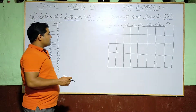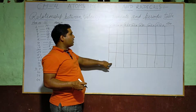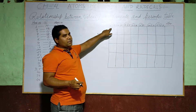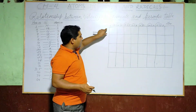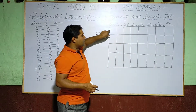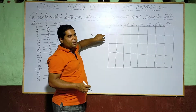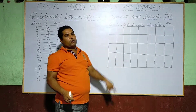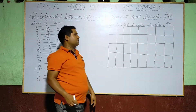There are two types of columns here. One is the vertical column, known as a group. The horizontal rows are known as periods.